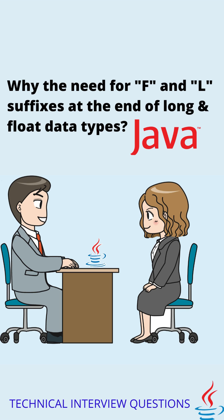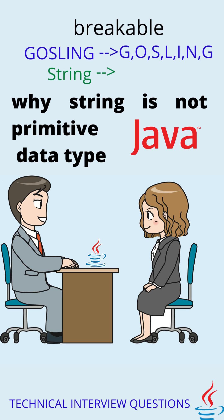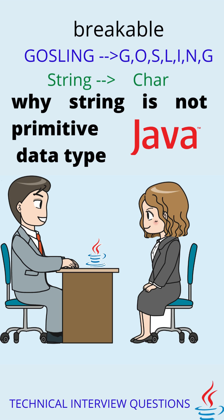Why is String not a primitive data type? String is not a primitive data type because we can break it down into char. For example, the string 'gosling' can be divided into g-o-s-l-i-n-g. But primitive data types are not breakable — we cannot break a char down any further.